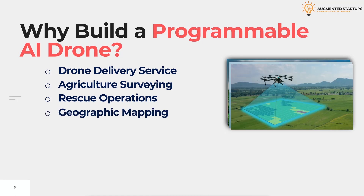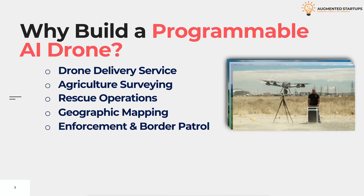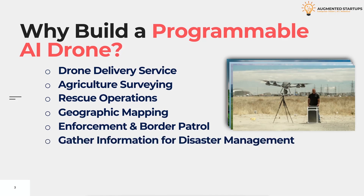Geographic mapping is another application where drones shine, because they can reach both low and high altitudes, which makes them super versatile. Enforcement and border control is yet another application - imagine if an illegal border crosser manages to run away from fixed cameras; you can get a drone to track and follow them until they're caught. Drones are also great for disaster management, and the final application is aerial photography for journalism and film, though off-the-shelf drones usually suffice for that.